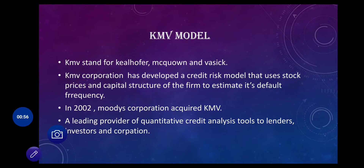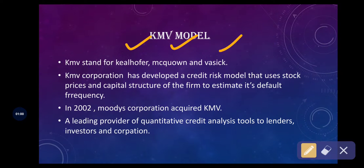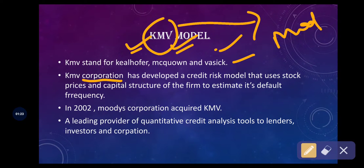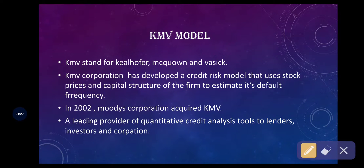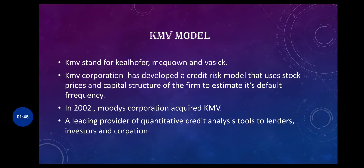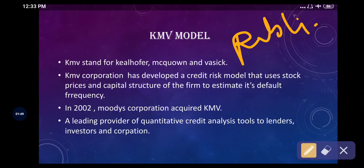KMV stands for Kealhofer, McQuown, and Vasicek. This is a corporation — a company whose main work is to develop and provide models for managing credit risk. The basis they use for calculating credit risk is stock prices, meaning share prices. This model is best suited for public companies, as their shares are listed on the stock exchange.